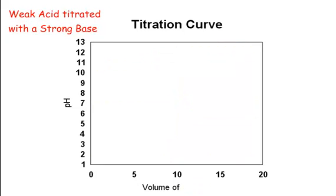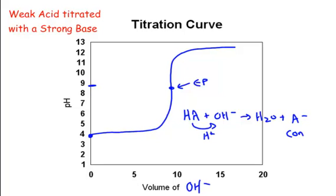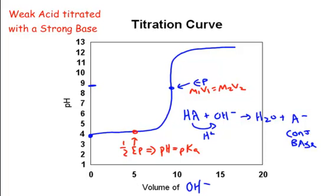The second curve is a weak acid titrated with a strong base. A weak acid starts at a slightly higher pH. The curve rises then skyrockets up similarly, but the equivalence point is above pH 7. Why? Because titrating HA (weak acid) with strong base OH- gives H2O and A- — that A- is a conjugate base, leaving you with a basic solution at the equivalence point. Also, halfway to the equivalence point, the pH equals the pKa — this will make more sense when we cover equilibrium.